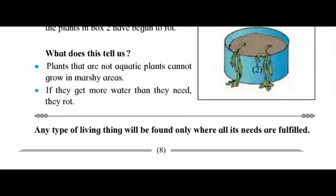The plants in box 1 are growing well, but the plants in box 2 have begun to rot. What does this tell us? Plants that are not aquatic cannot grow in marshy areas. If they get more water than they need, they rot.